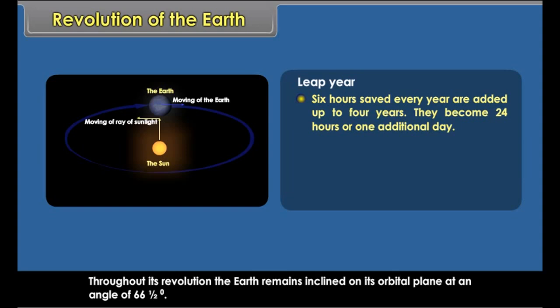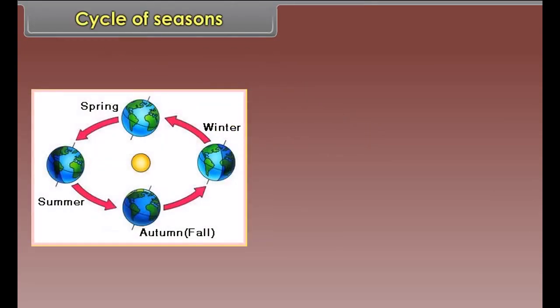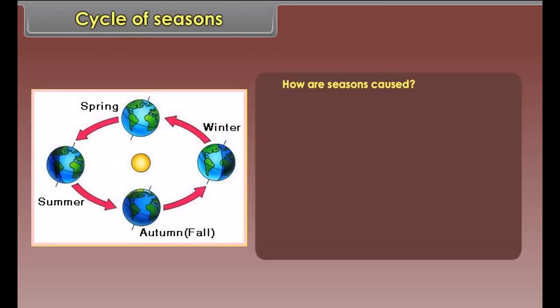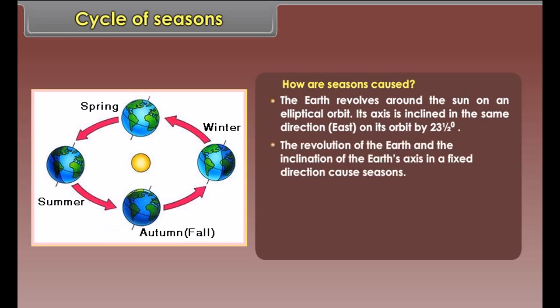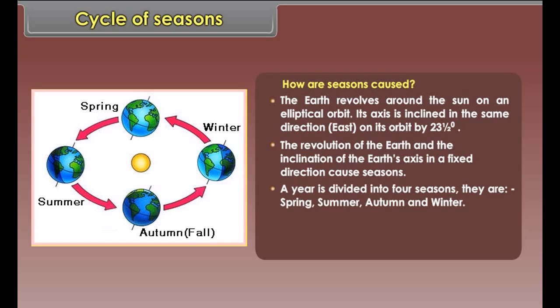Leap year. Six hours saved every year are added up over four years. They become 24 hours, or one additional day, which is added to the month of February. It is because of this that every fourth year, February has one more day — 29 days instead of 28 days. Such a year with 366 days is called a leap year.